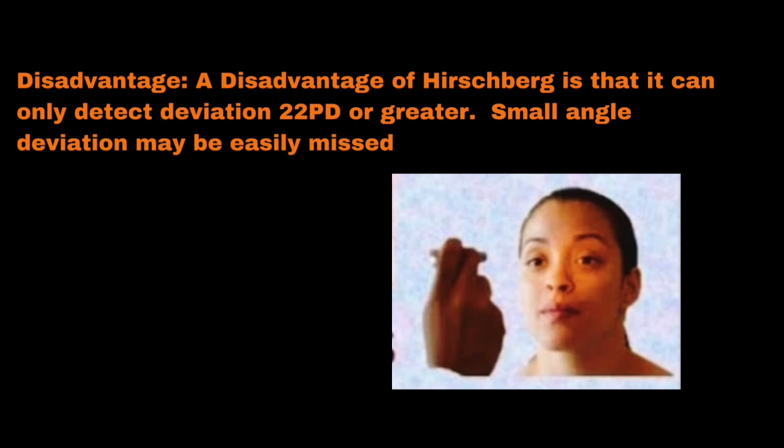Disadvantages: it can only detect deviations of 22 prism diopters or greater, so small angle strabismus detection is very limited. Additionally, microtropia cannot be detected with the Hirschberg Corneal Reflex test.